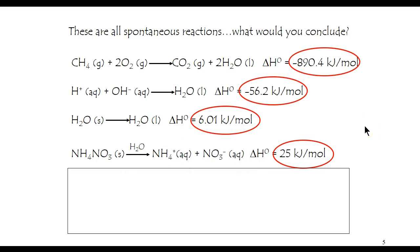What's happening is these things are increasing in their randomness. That gives it a little push and makes the overall delta G, the free energy of the reaction, negative.